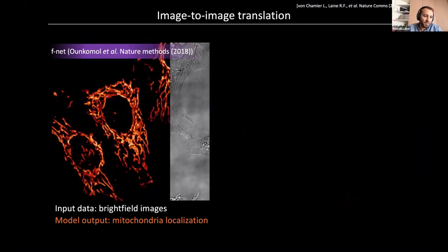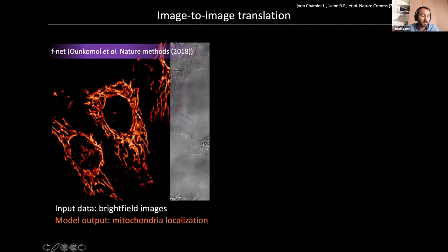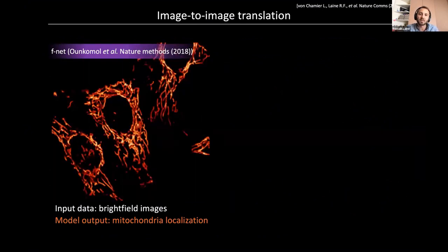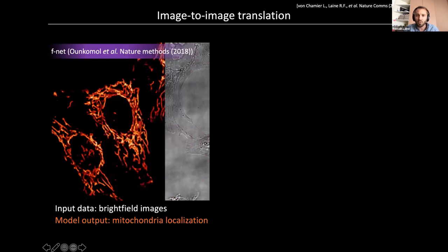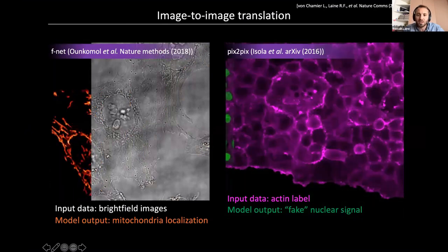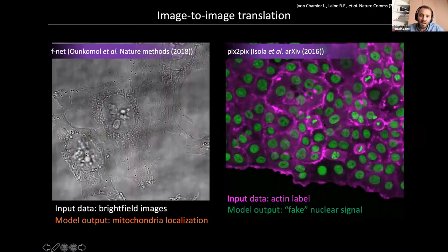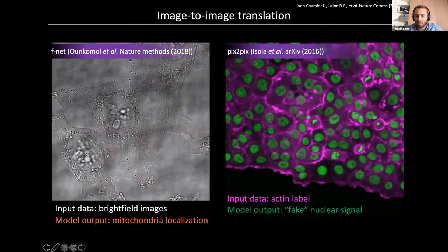Another task we've implemented is image-to-image translation. The idea is to feed the network bright-field images as input and fluorescence images as output, so the neural network learns to predict pseudo-fluorescence purely from bright-field images — something extremely difficult with classical algorithms. We've implemented the CycleGAN approach, as well as Pix2Pix networks. For example, Pix2Pix allowed us to predict fake nuclear DAPI signal purely from an actin-labeled signal, and Guillaume will show more data on this later.